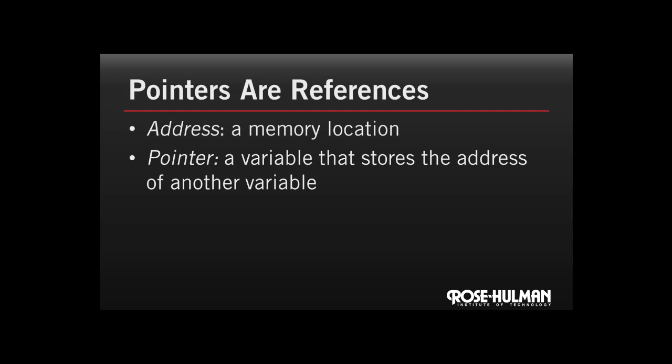In C, you can get a reference to any variable. And these references are called pointers. Now there are a couple new terms that you'll need to be familiar with. The first is an address. An address is simply the location in memory of a variable. Second, a pointer is a variable that stores the address of some other variable.